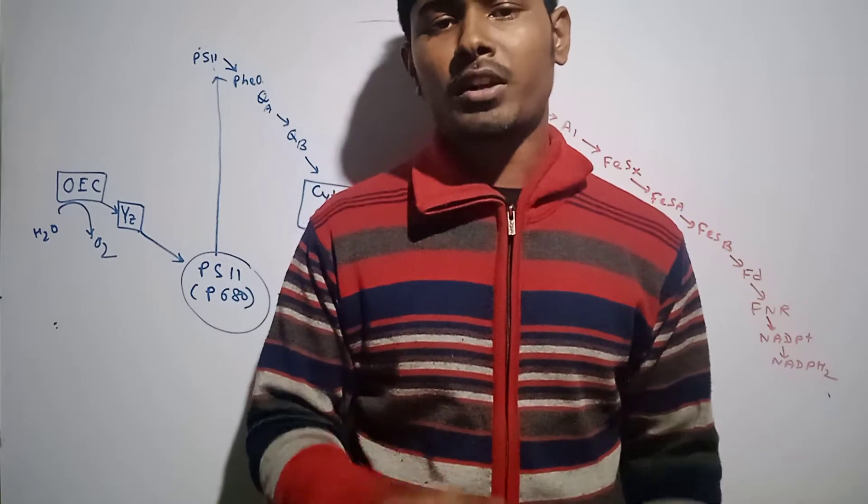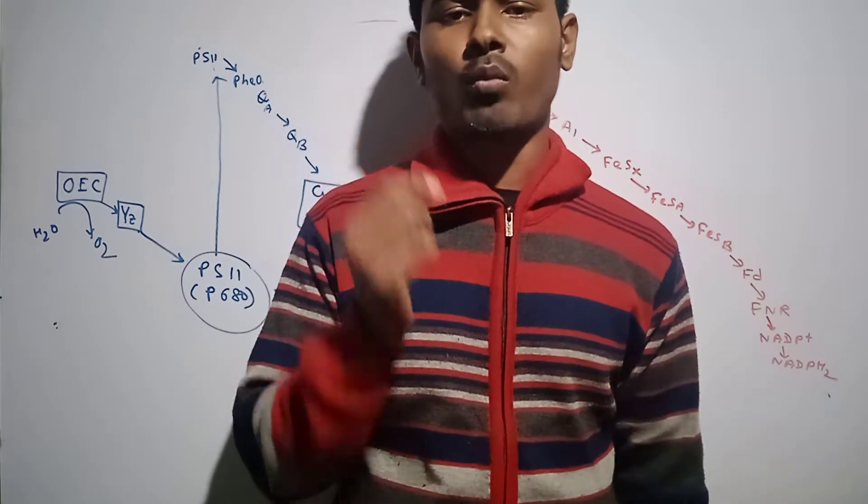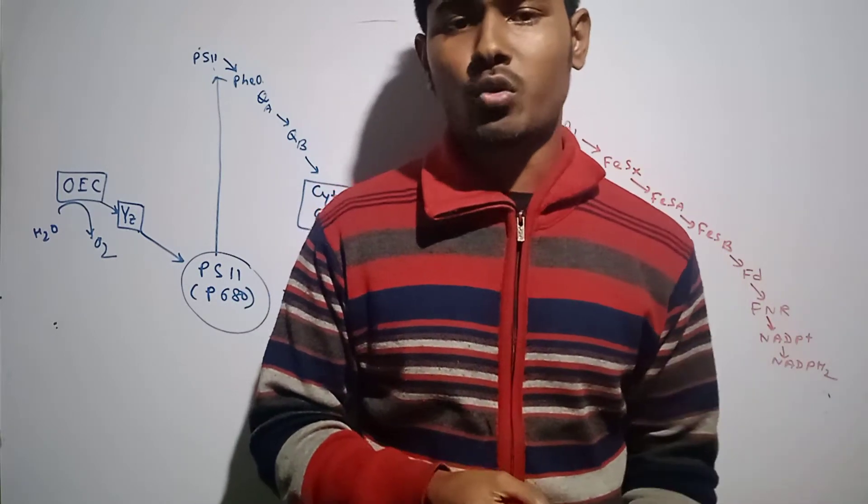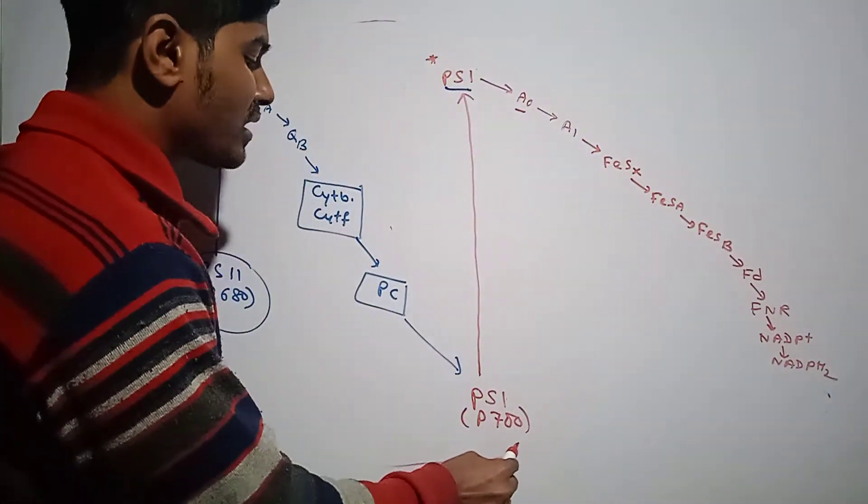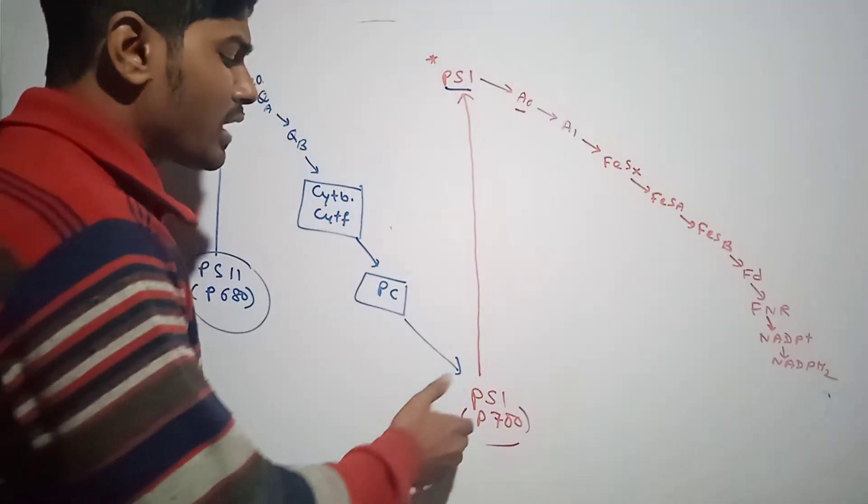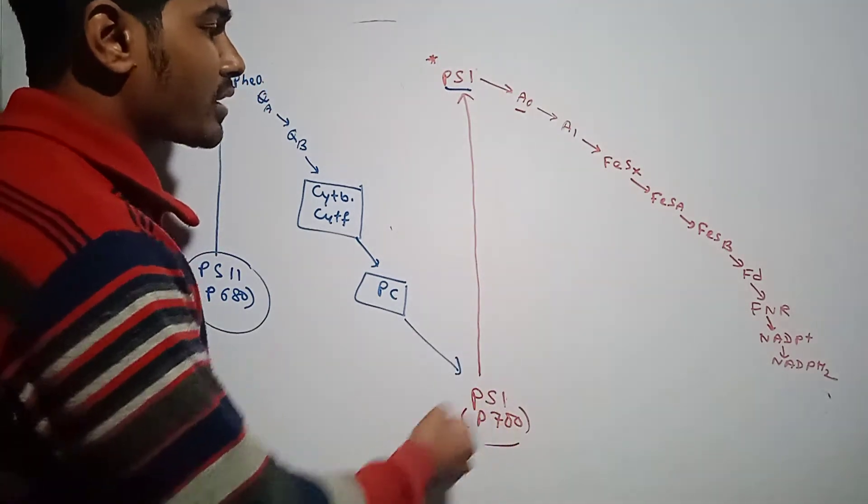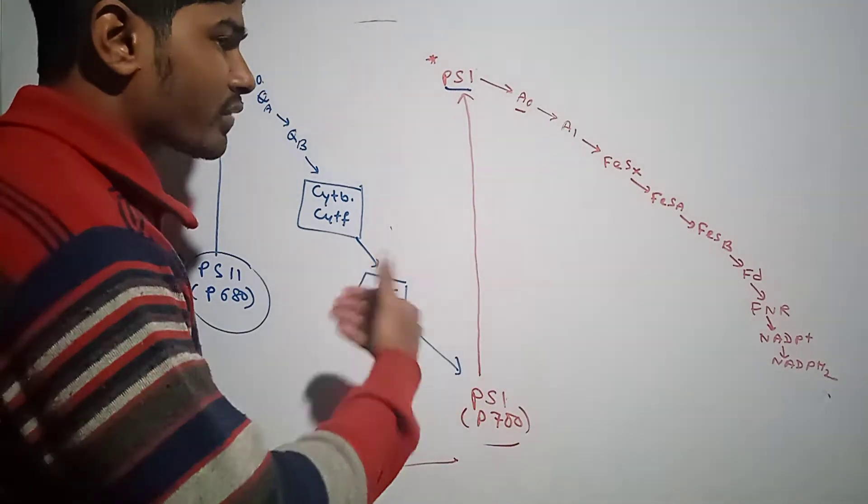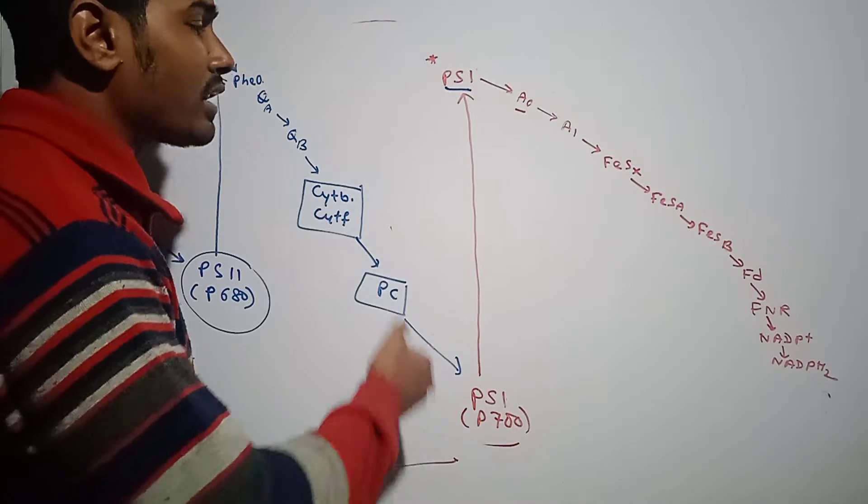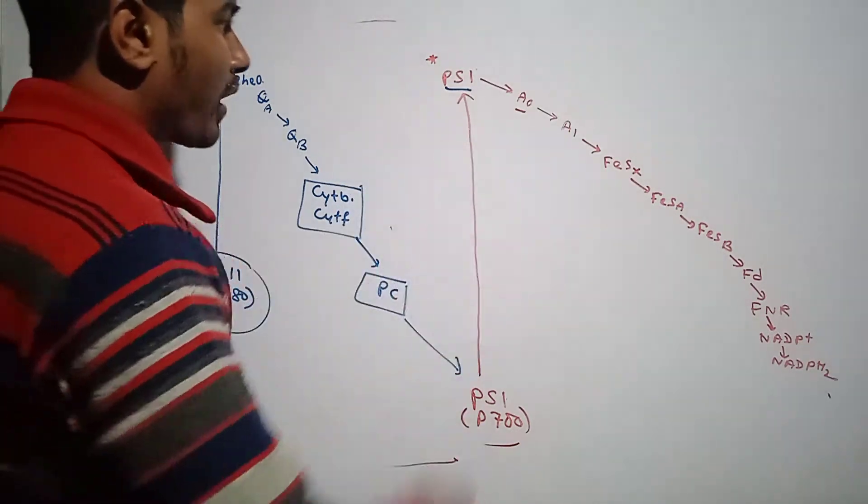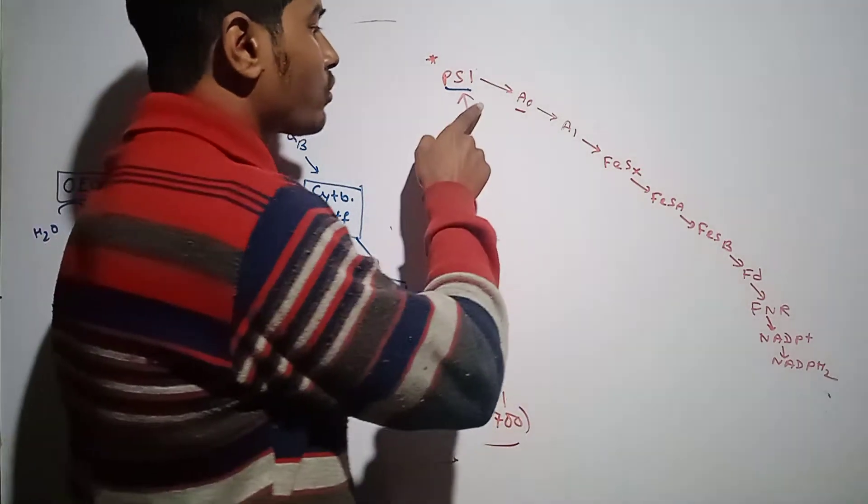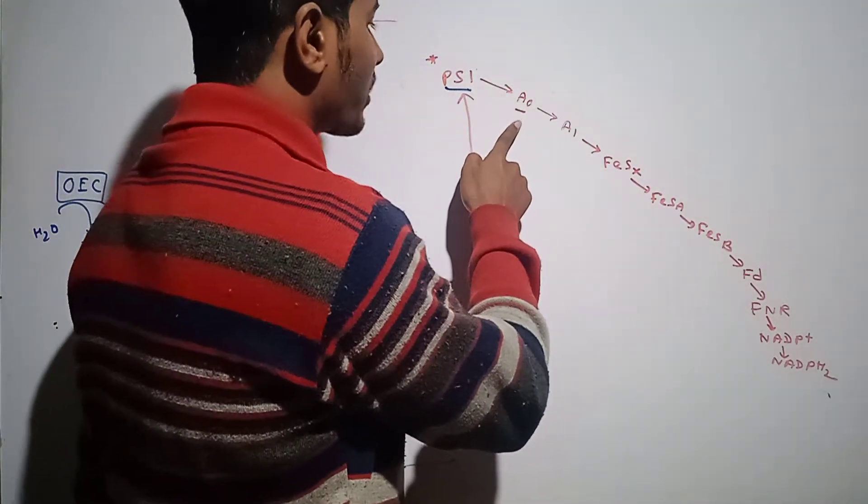There are two photosystems: Photosystem 1 and Photosystem 2. The Photosystem 1 reaction center chlorophyll is called P700 because it absorbs light of 700 nanometer wavelength. When it absorbs light, it gets activated and the excited electrons are released by it.